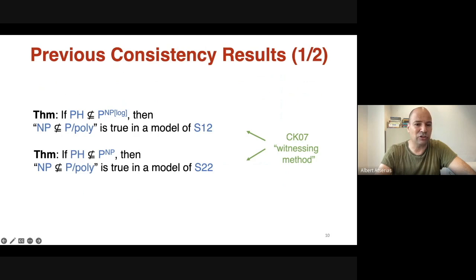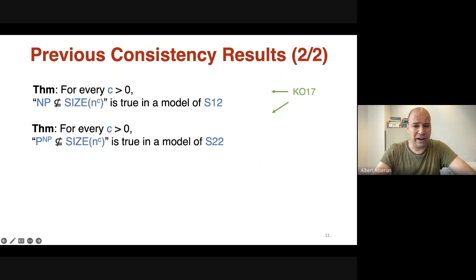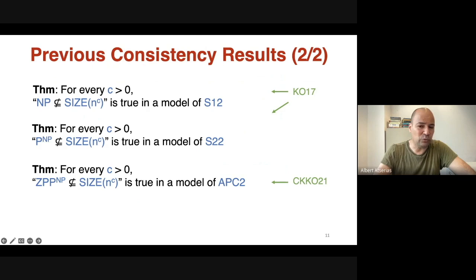Before our results, there were some previous consistency results. Cook and Krajíček showed NP ∉ P/poly is true in a model of S¹₂ but only subject to a complexity assumption. For S²₂, one can assume PH ∉ P^NP and get NP ∉ P/poly in a model of that theory. There are also unconditional results: Krajíček and Oliveira showed NP doesn't have circuits of size n^c for any fixed c in a model of S¹₂.